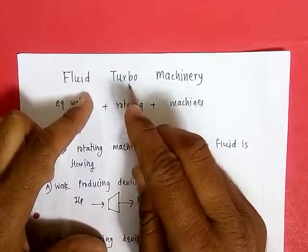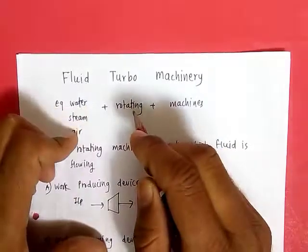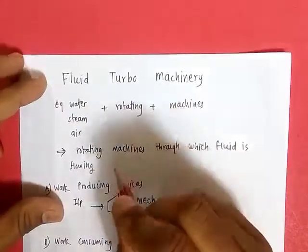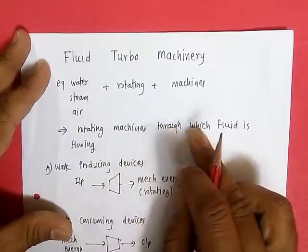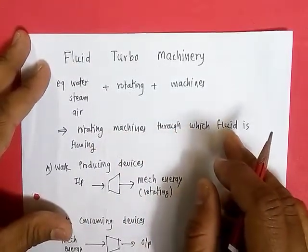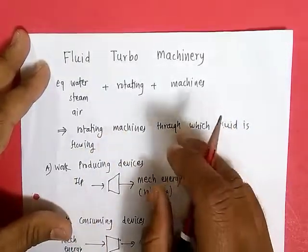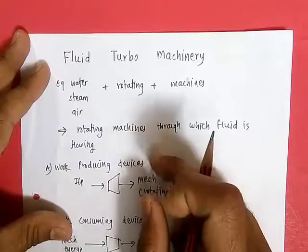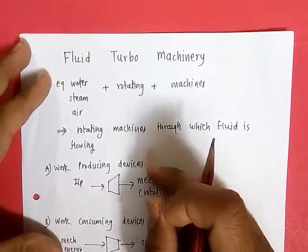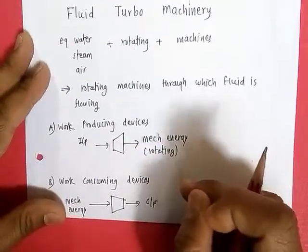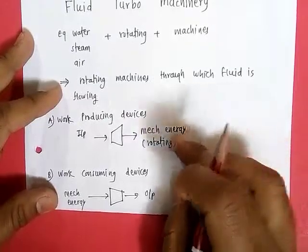Then the middle word is turbo. Turbo means rotating. So the word fluid turbo machinery represents rotating machines through which fluid is flowing. That means fluid turbo machines are rotating machines through which fluid is flowing. In this subject, we are studying all about these machines through which fluid is flowing and whose action is rotating.